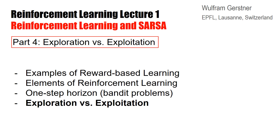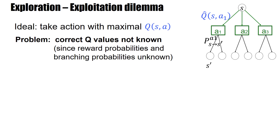Welcome to the class on reinforcement learning and artificial neural networks. In this video, I discuss the dilemma of exploration versus exploitation. In a graph like the one here, we have different actions to choose from, and ideally we would take the action with a maximal Q value. The problem is that we only have estimated Q values, indicated here by this little head. So the correct Q values are not known, because the reward probabilities and the branching probabilities are not known.